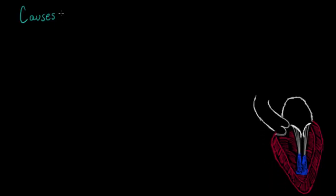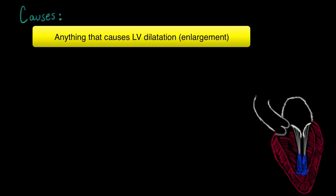So let's talk about the major causes of mitral regurgitation — there are a lot of them, so I'll focus on the major ones. One of the first is anything that leads to dilatation of the left ventricle. Left ventricular dilatation can actually stretch the heart and cause the mitral valve to no longer come together appropriately, leading to mitral regurgitation.